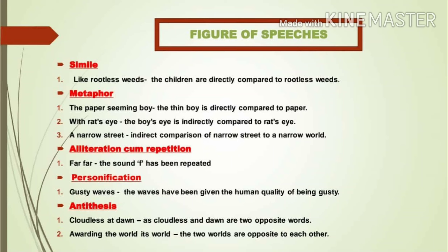The poet has also used personification: in the expression 'gusty waves,' the waves are given the human quality of being gusty. Another poetic device used is antithesis — where two opposite ideas are placed together in a statement. In this stanza, 'cloudless at dawn' and 'awarding the world its world' are both examples of antithesis.